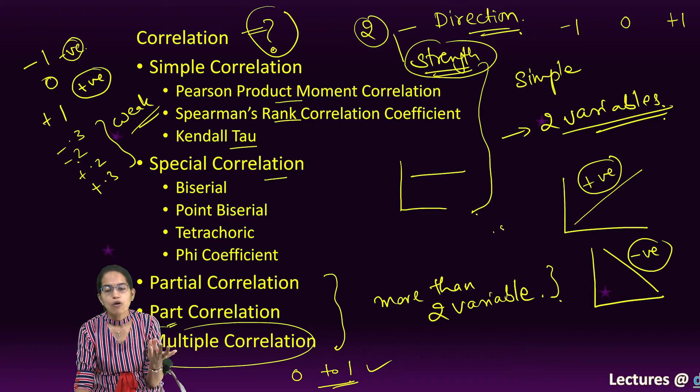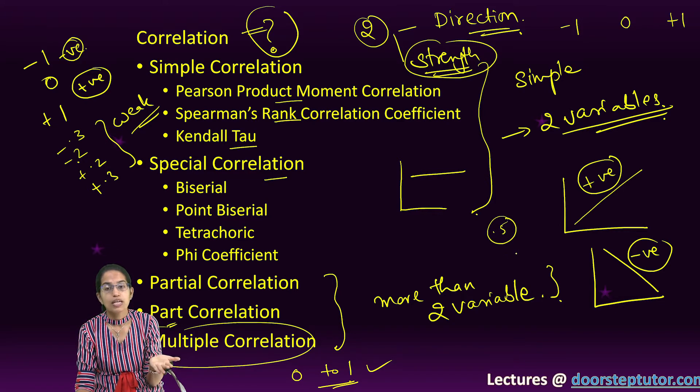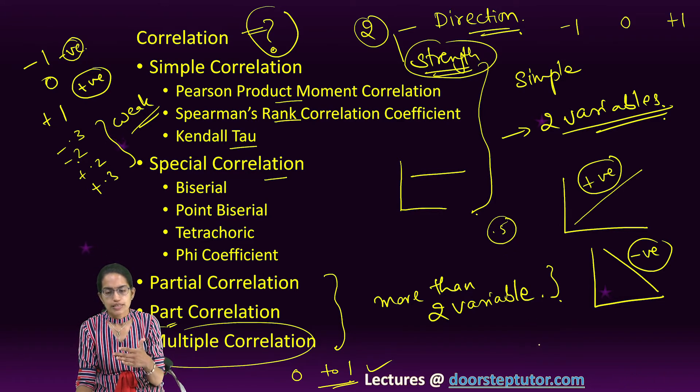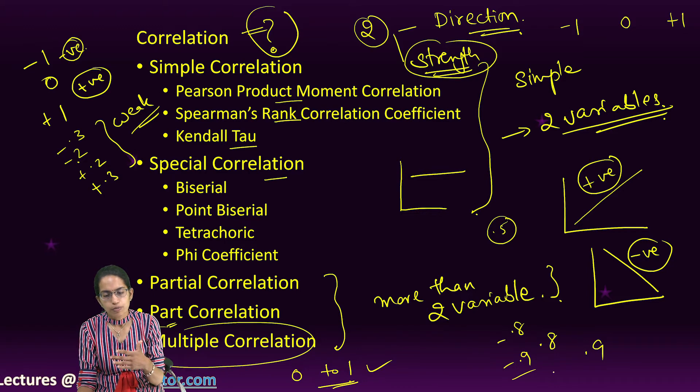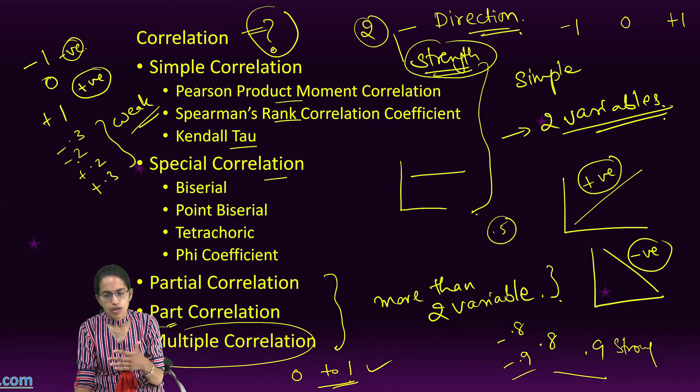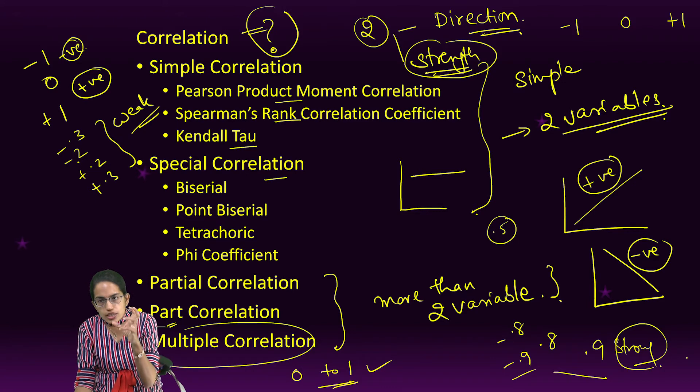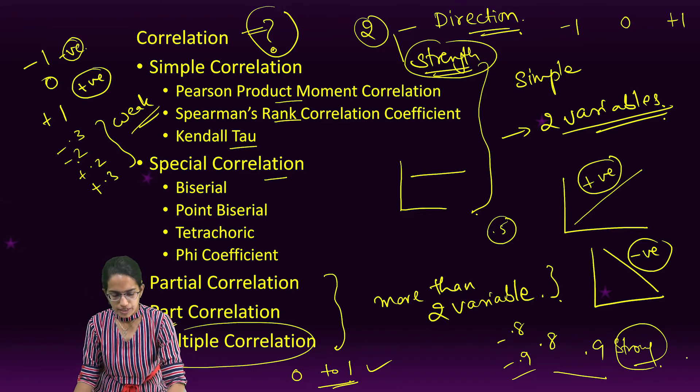Any value above 0.5 would be a strong correlation. So let's say if I take 0.8, 0.9, minus 0.8, minus 0.9, they could be positive or negative, but they are strong. There is a strong relation between the two variables that exists.